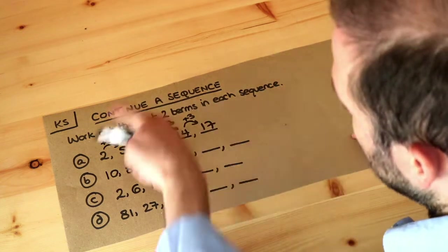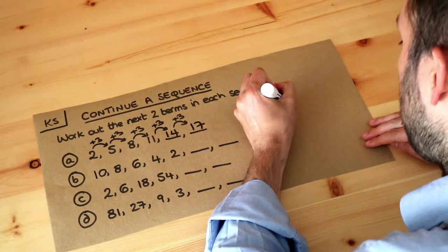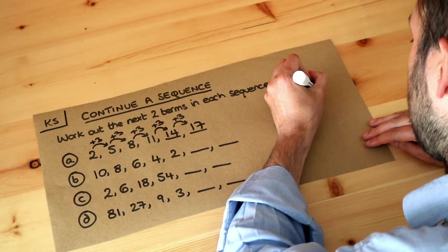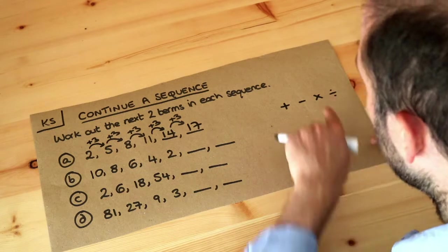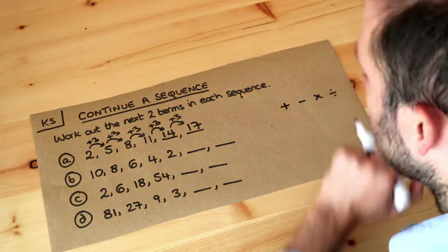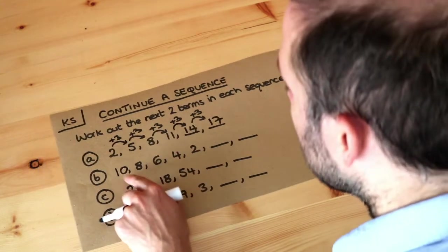Now for all the questions in this particular key skill we're only going to be using adding, subtracting, timesing or dividing. So it might be that we add a number each time or subtract a number each time or times by a number each time or divide by a number each time. Let's look at this next sequence.